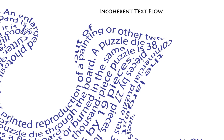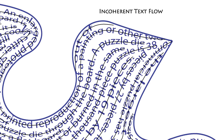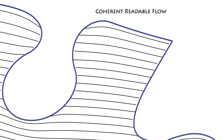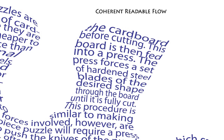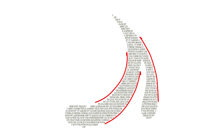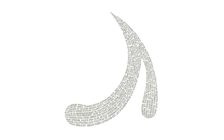For readability, we need text lines to have low curvature and a natural ordering or coherence. To convey the image, the text should adhere to the shape and shading of the image regions, and have smooth coherent directions throughout.